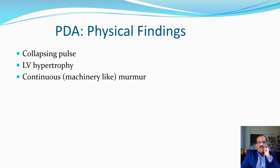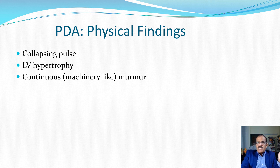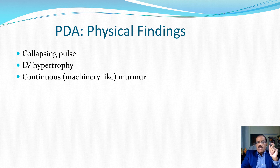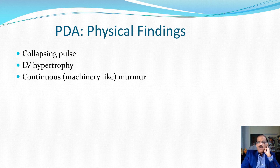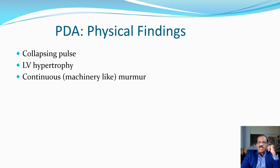There is a continuous machinery murmur heard both during systole and diastole — throughout the entire cardiac cycle. The intensity varies because the pressure gradient is greater during systole than diastole, but blood always flows from left to right. The murmur is louder during systole and softer during diastole. This changing intensity resembling a running machine is why we call it a machinery murmur.